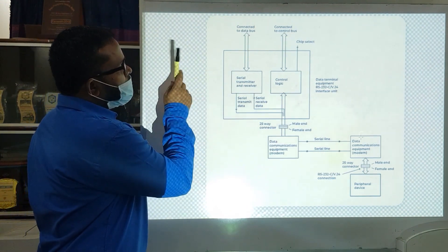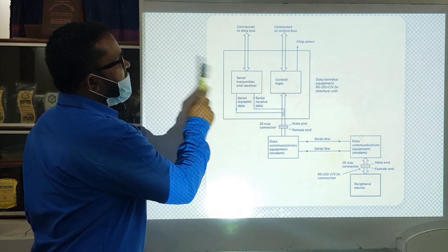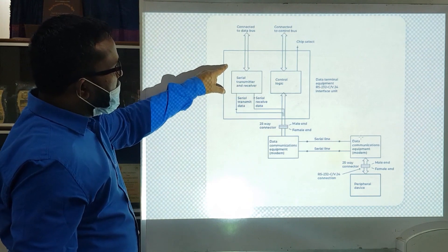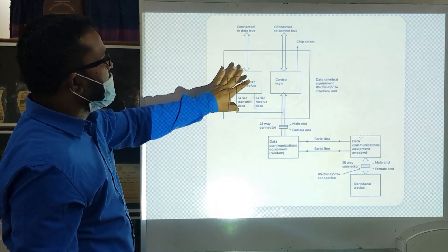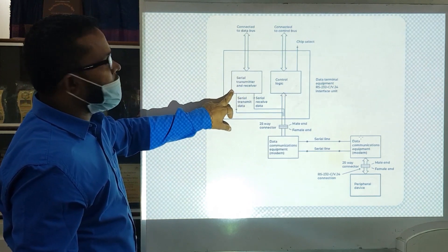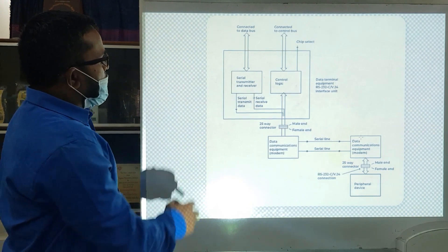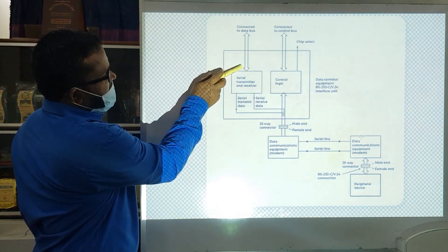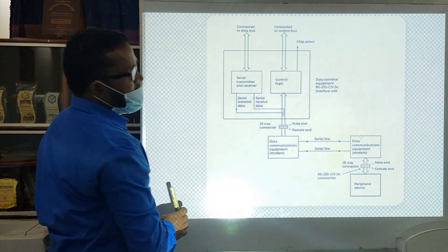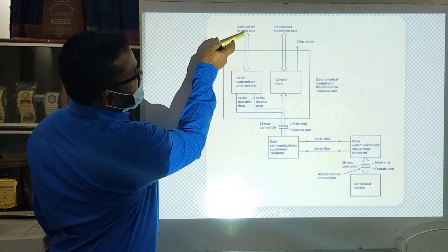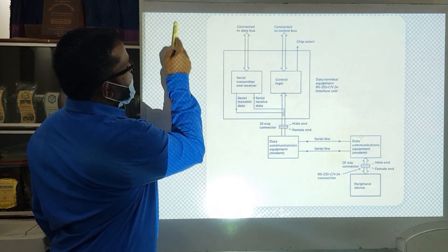We are going to look at a series of data transmitters and receivers. The data in this device can be transmitted and received using a serial transmitter. You can collect data from this device into a database.